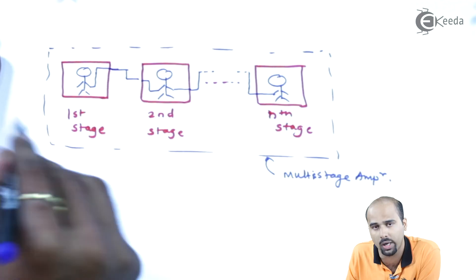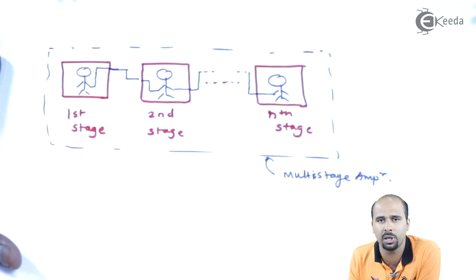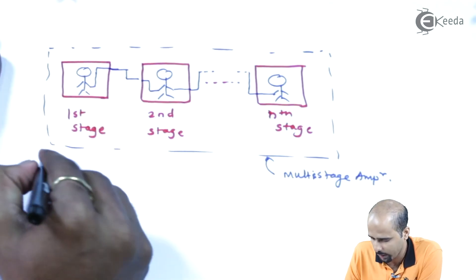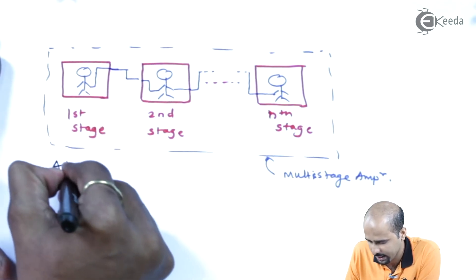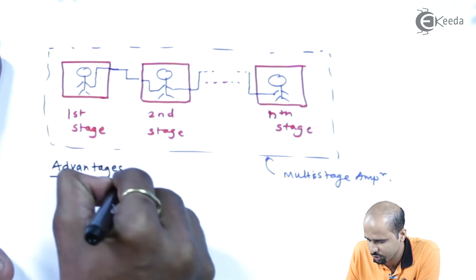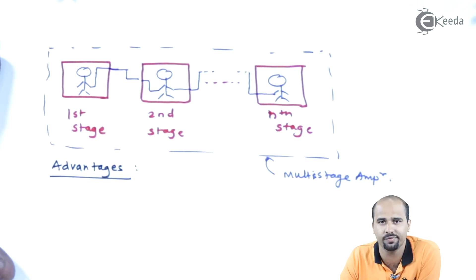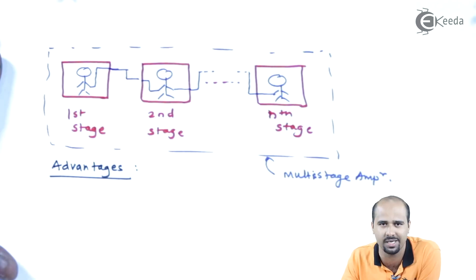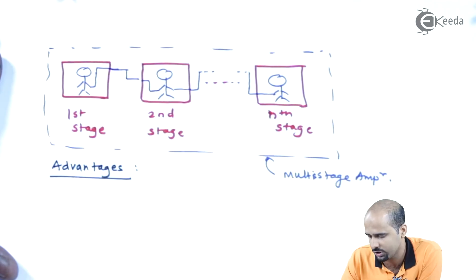Now we will have to learn what qualities we will be getting from a multistage amplifier. We will learn the advantages one by one, and obviously if there are pros there are cons — so we will also be getting some limitations and disadvantages that we have to overcome before moving further for particular applications using this multistage amplifier.